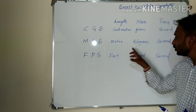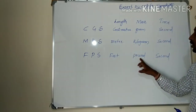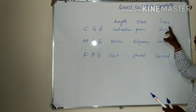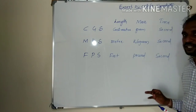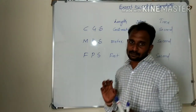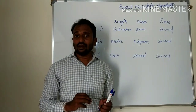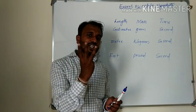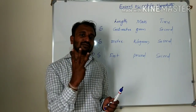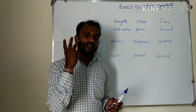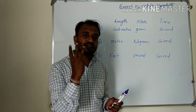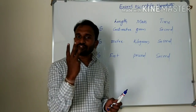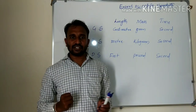Mainly we consider three types of systems for measuring physical quantities: the CGS system, MKS system, and FPS system.